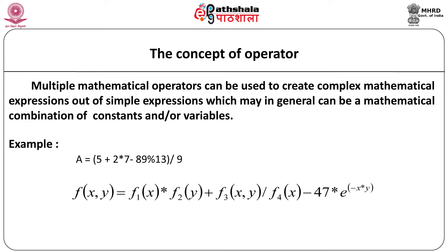We observe multiple mathematical operators used to create complex mathematical expressions out of simple expressions. For example, A equals 5 plus 2 into 7 minus 89 modulo 13 divided by 9. Or in two-dimensional functions, we may construct f(x,y) equal to f1(x) multiplied by f2(y) plus f3(x,y) divided by f4(x). Multiple uses of mathematical operators can create complex mathematical expressions involved in the study of physics.